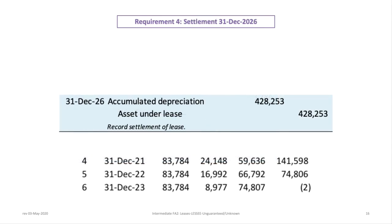For the final part of requirement 4, we fast forward to December 31, 2026, and record settlement of the lease. At this point, all depreciation expense entries have been recorded, so the accumulated depreciation balance equals the asset under lease balance of $428,253. The settlement entry is to debit accumulated depreciation and credit asset under lease for $428,253, effectively de-recognizing the asset and returning it to the lessor.